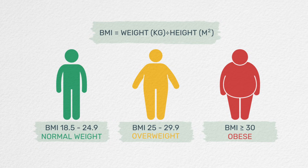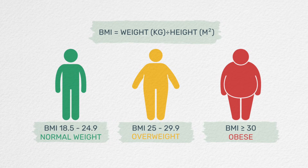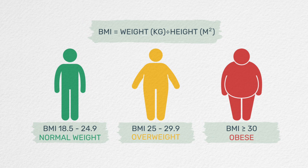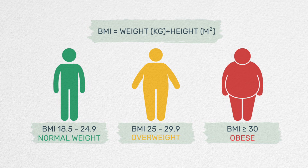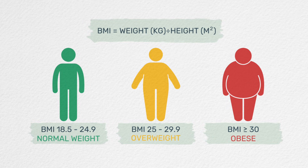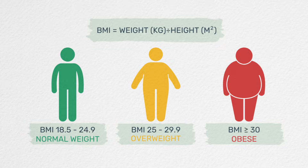Everybody should know their BMI as per their weight and height. If the BMI is less than 25, you are normal weight. 25 to 30, you are overweight — most people fall in this range because they are more than 25. If more than 30, they become obese. Both obesity and overweight are dangerous — that is 100% true.